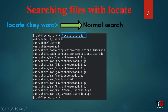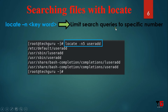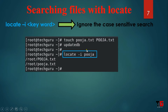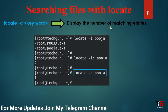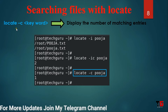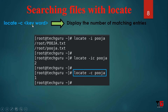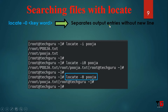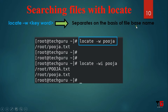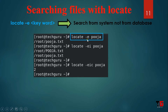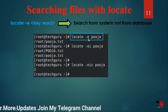For a normal search, use 'locate keyword'. To search with a specific number of results, use 'locate -n'. To ignore case sensitivity, use the minus i option. To display the number of matching entries, use the minus c option. To separate output entries without a new line, use minus 0. To search by file name pattern, use the minus w option. To search from the actual filesystem rather than the database, use the minus e option.